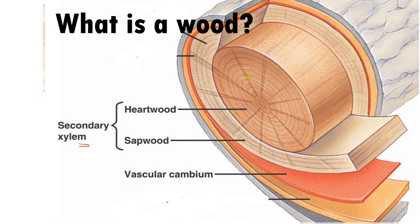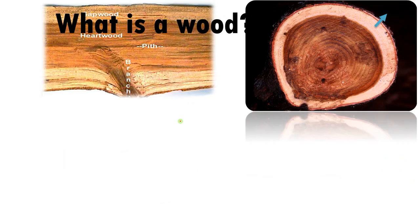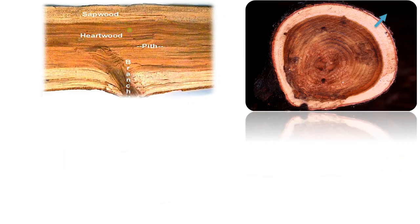The central core, the darker wood, is called the heartwood, whereas the outer lighter wood is called the sapwood. In this radial section, the darker colored wood is the heartwood, whereas the outer lighter colored region is the sapwood, and this is the TS or transverse section.